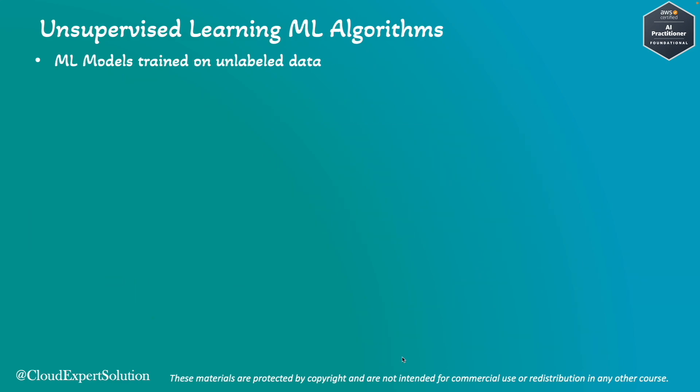Next, we will review unsupervised machine learning algorithms. Unlike supervised learning, for unsupervised learning we use unlabeled data — meaning there are no tags or predefined values for the data. Let me explain with a real-life example.